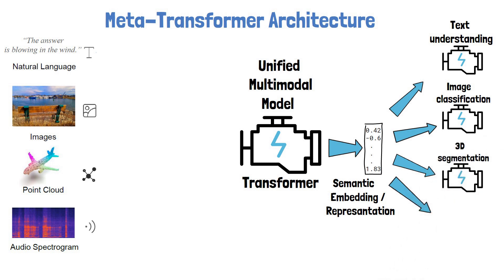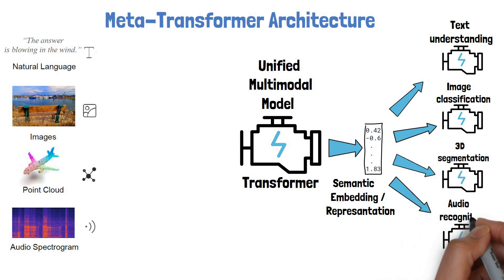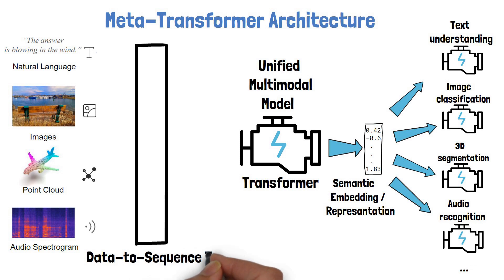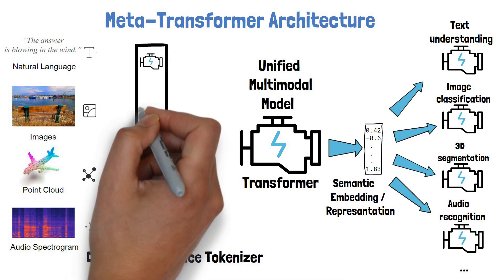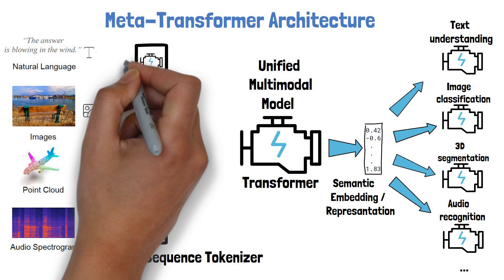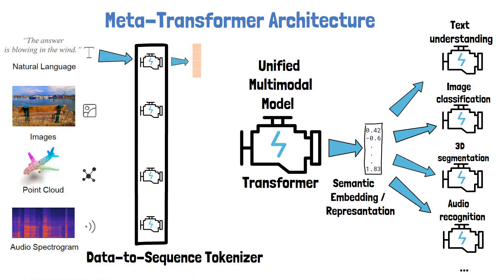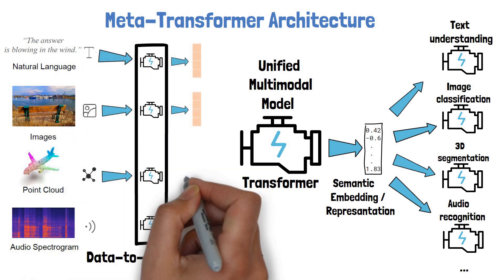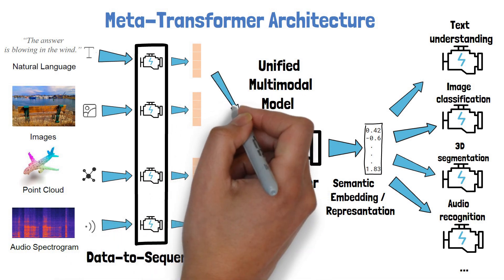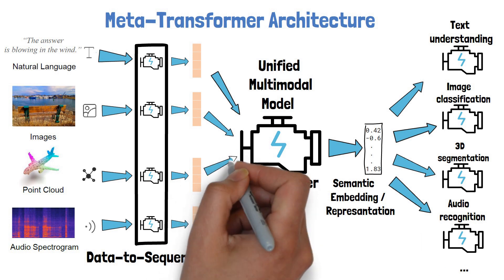But how can the transformer process information from different types of data? For this, the MetaTransformer has another layer called the data-to-sequence tokenizer, which consists of small tokenizers where each small tokenizer is a modality specialist that converts an input from the modality it knows into a sequence of tokens. The transformer is then capable of processing that sequence of tokens.